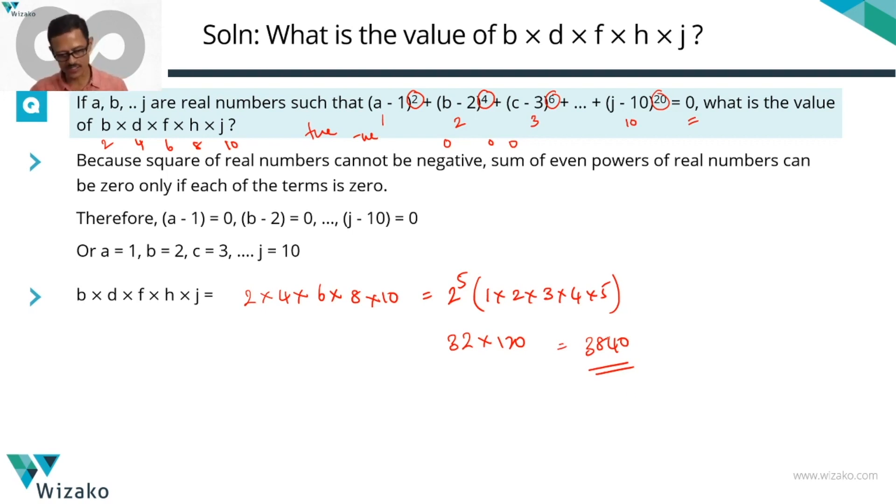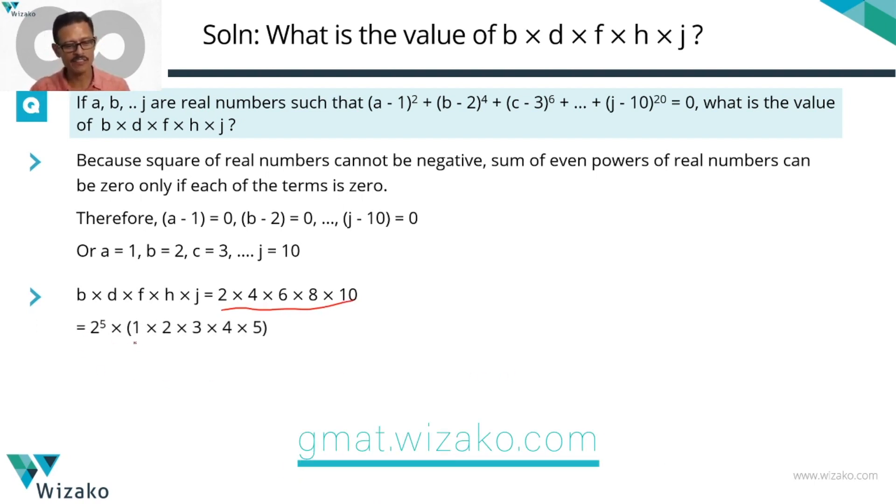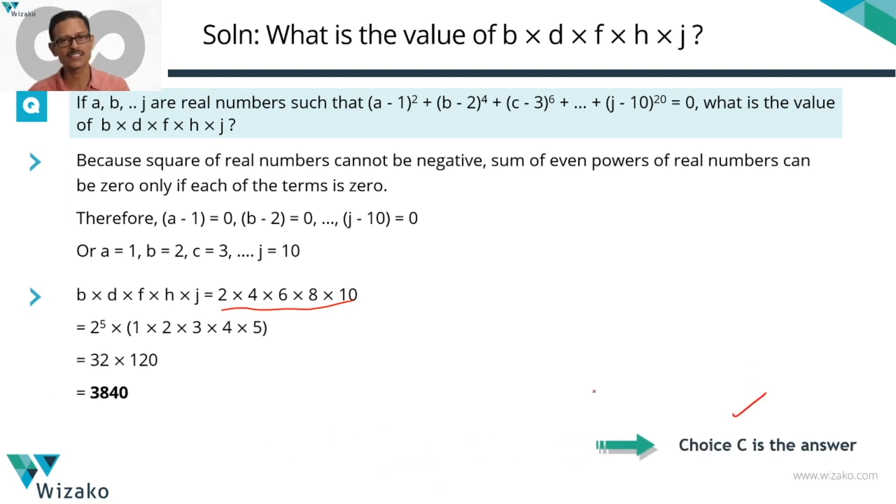Quickly summarize this calculation in printed form. We have the product equal to this expression. Taking 2 common from each of these five numbers, we have 2⁵ into actually a 5 factorial. If you remember the value of 5 factorial, that's 120. 32 into 120 is 3840. Choice C is the correct answer.